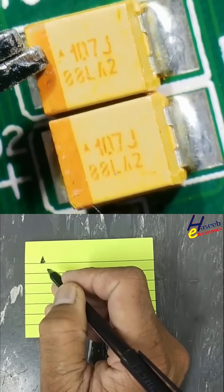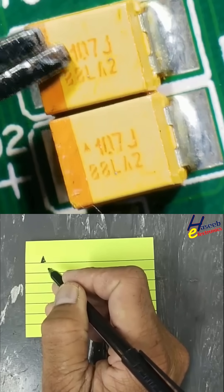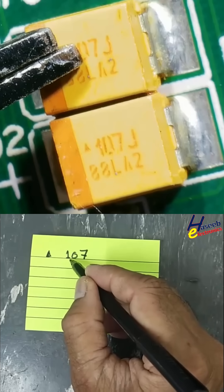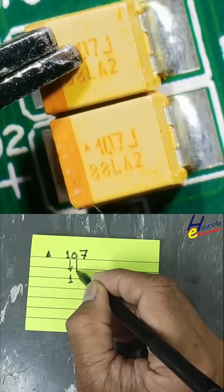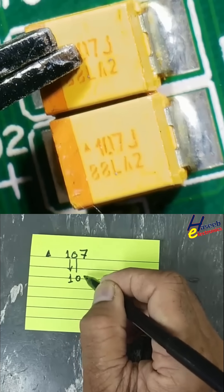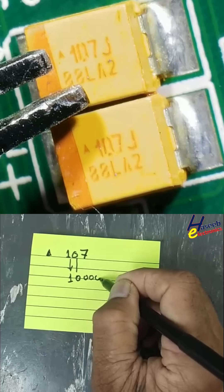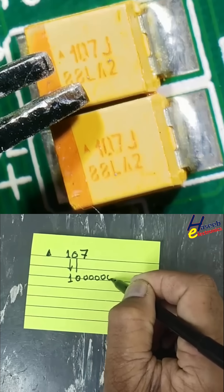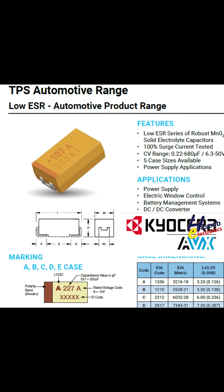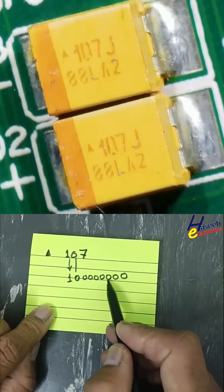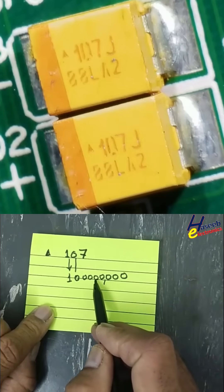If we check this capacitor logo, the manufacturer is ABX Kyocera. Then 1 0 7 - the 1 is a significant number, 0 is a significant number, and seven represents zeros: one, two, three, four, five, six, seven picofarad. One, two, three goes to nanofarad. One, two, three brings us to microfarad.